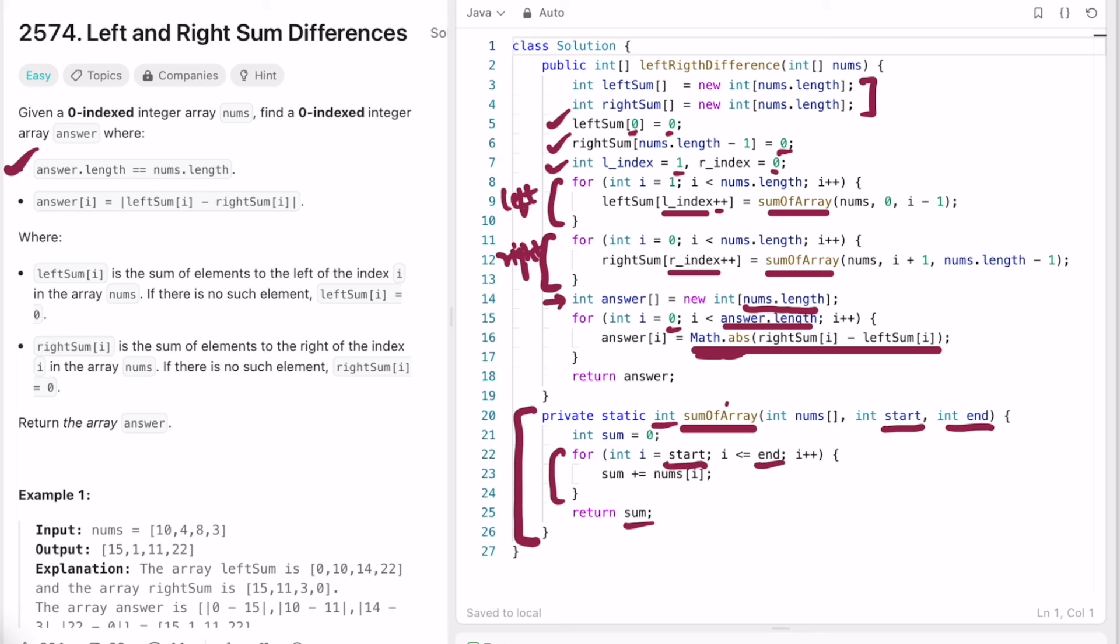So the time complexity of this approach is O(n) where n is the length of the input array nums, and the space complexity is also O(n) because you are using two arrays to form the output.